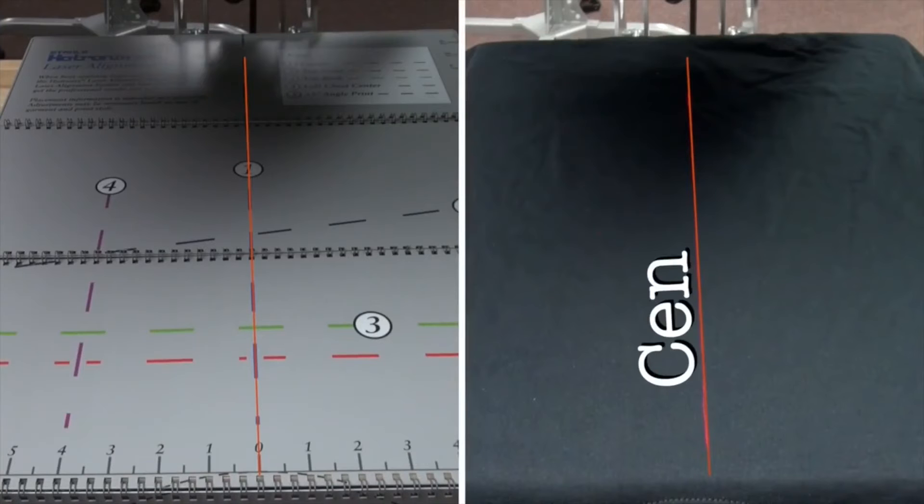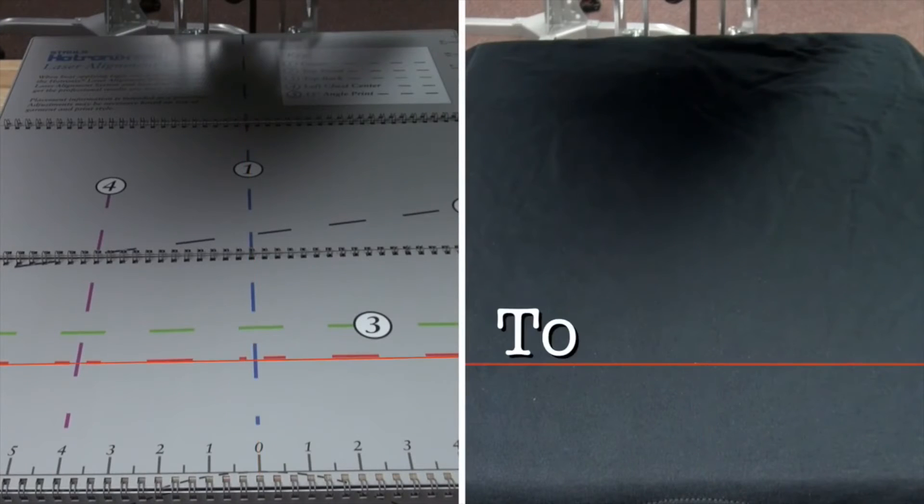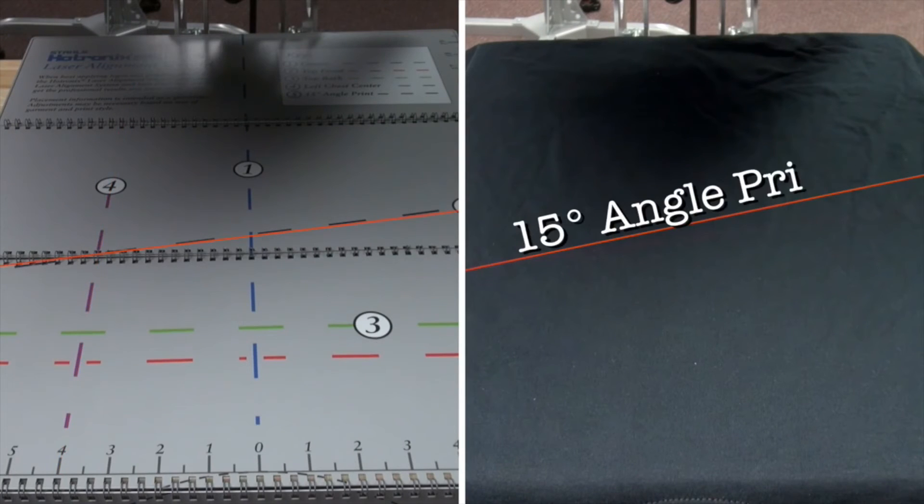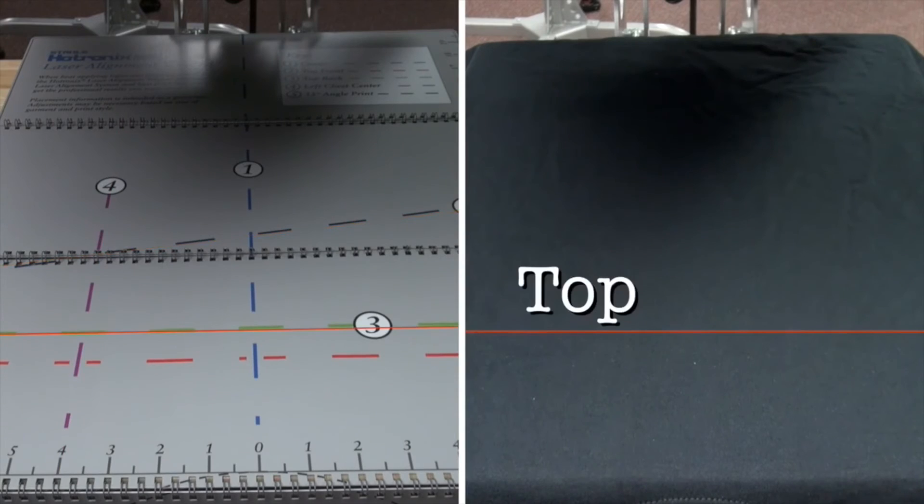Use the center template to find the midpoint of the garment for full front designs. Top front is used for center chest designs or text. Left chest center is used to find the midpoint for left chest designs. The 15 degree angle is for the popular script with tail design. And top back is used for a player's name.